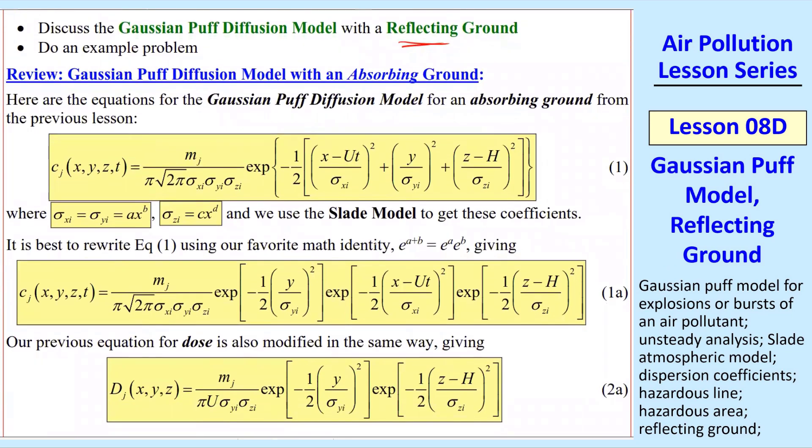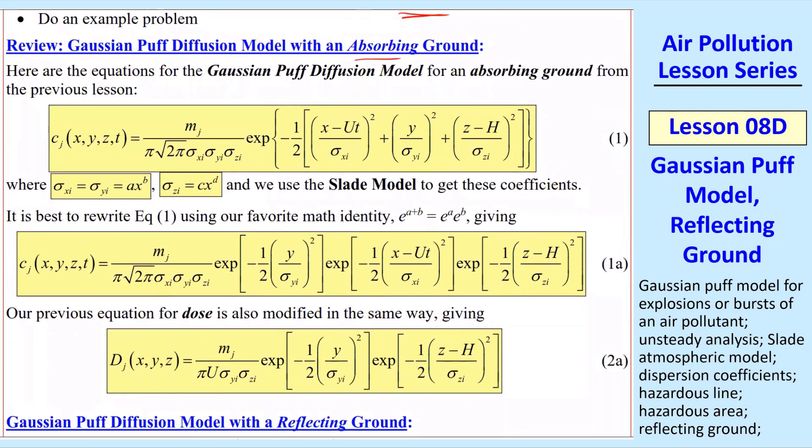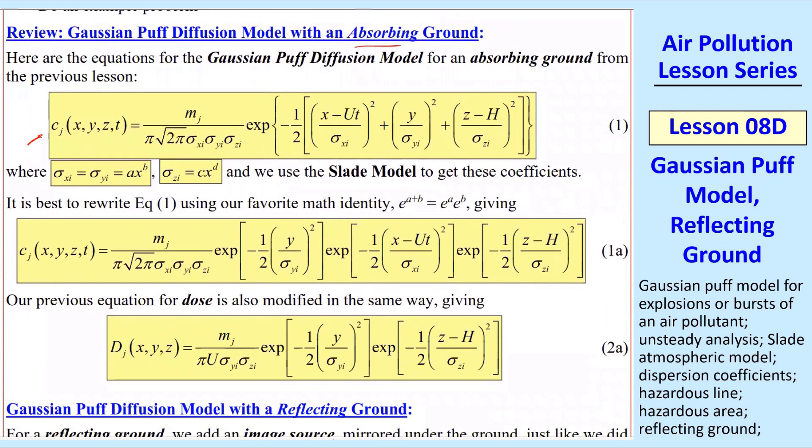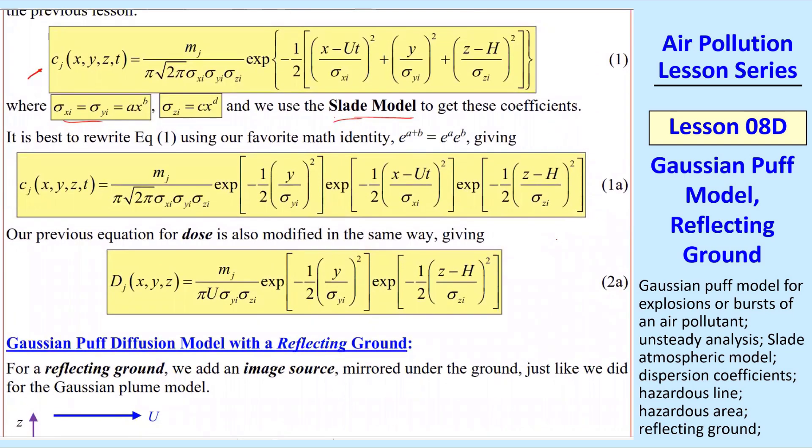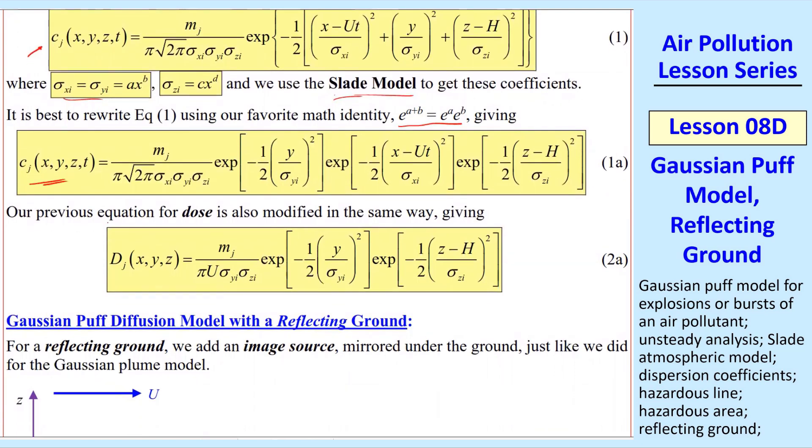Here's a quick review. Gaussian Puff Diffusion Model with an absorbing ground, we had equation 1 for the mass concentration. We also introduced the Slade Model for instantaneous diffusion coefficients. By integrating this, we got the dose, equation 2a for absorbing ground.